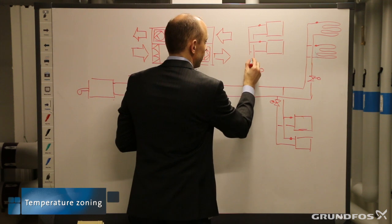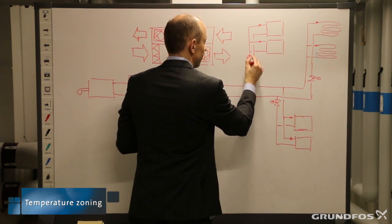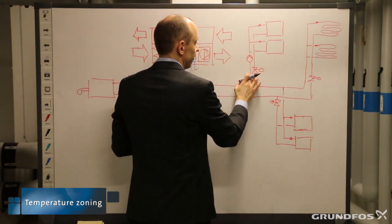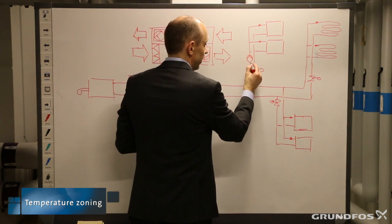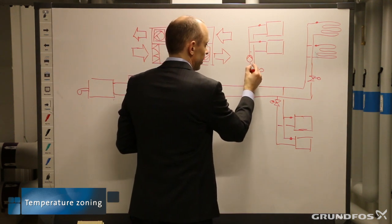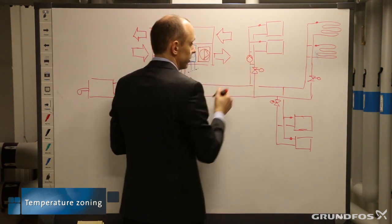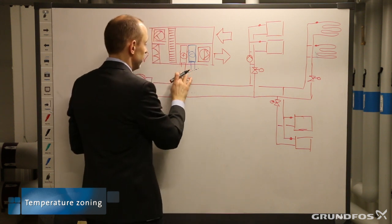A mixing loop basically consists of three parts: a control valve, a pump, and a bypass or shunt. Let's put that on everywhere.